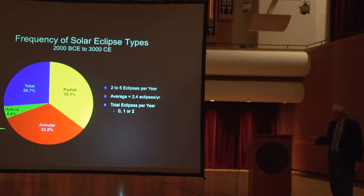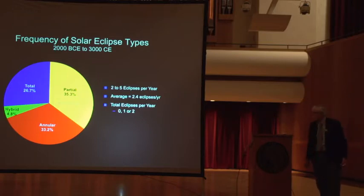There's one other category down here called hybrid, and that's a very odd animal. With a hybrid eclipse, it's total along some sections of that path of totality, and it's annular along other parts of that path. That's because the curvature of the Earth's surface brings it into various parts of the shadow, either the total part or the annular part. They're a very small fraction, only about 5% are the hybrid eclipses.